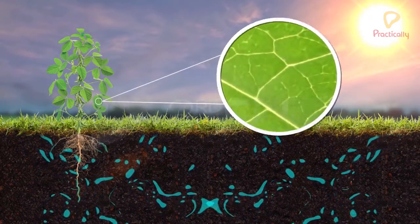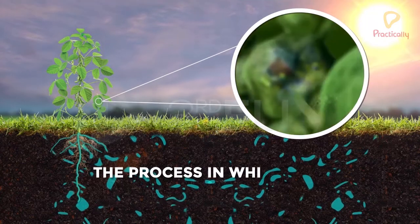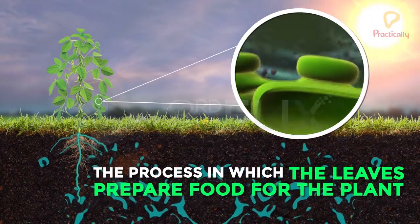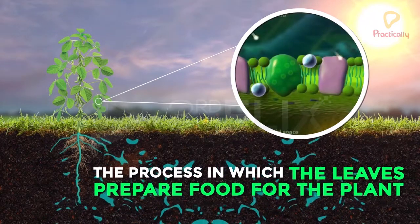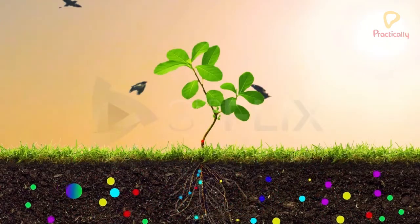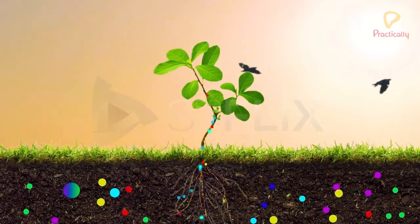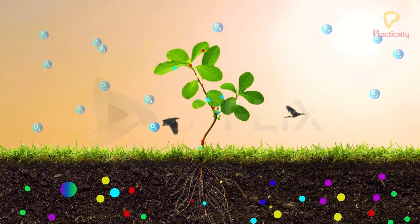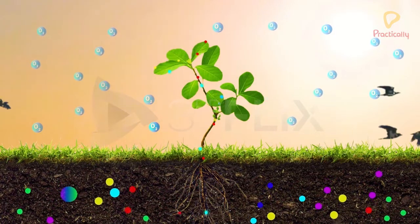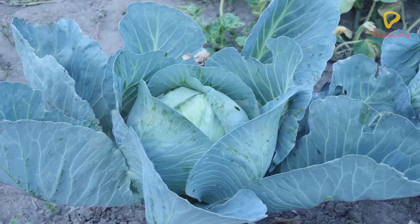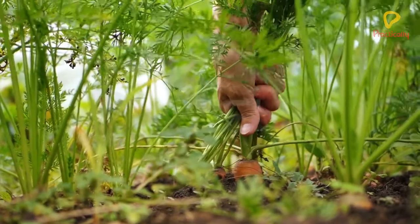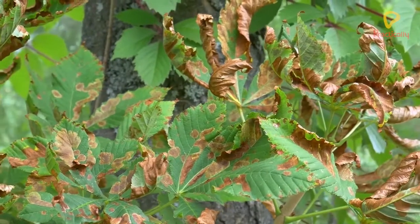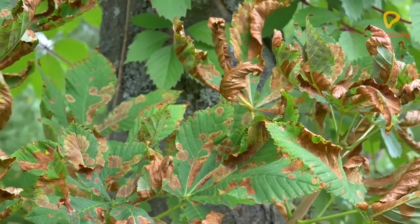Photosynthesis is the process in which the leaves prepare food for the plant in the presence of sunlight and chlorophyll. For this, they also use water and carbon dioxide. Plants also release oxygen in this process. The food prepared is stored in various parts of the plant.